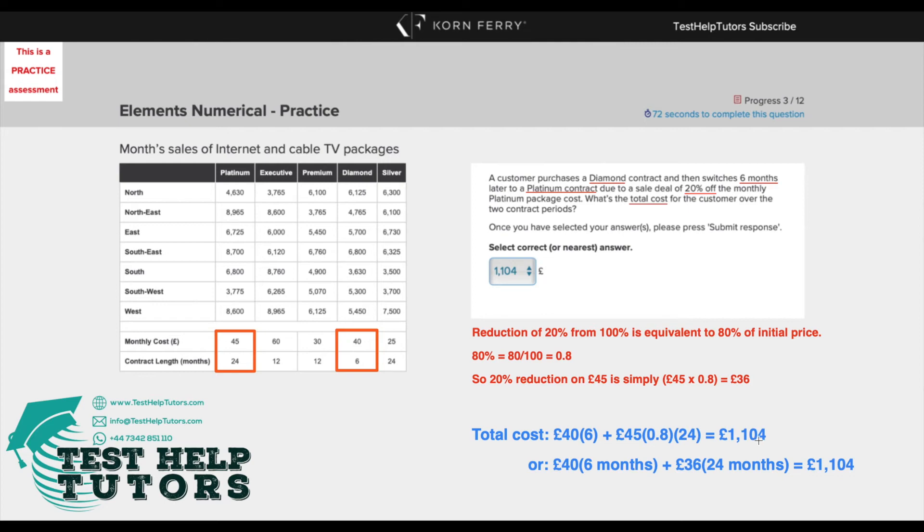Now, a quick explanation on percentage reduction. In the question they stated that there was a sale deal of 20% off the monthly platinum package cost. Normally the price of a platinum package cost is £45 a month. We had a reduced sale deal of 20% off. A reduction of 20% from an initial 100% is equivalent to 80% of the initial price. Simply 100 take away 20 is 80. So a reduction of 20% from 100% is 80% of the initial price.